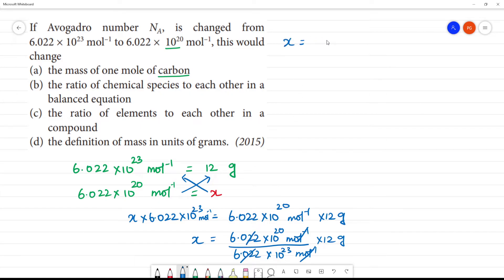x is equal to 10^23 mol^-1. So it is canceled. What happens? If Avogadro number changes from 10^23 to 10^20, the mass of 1 mole of carbon will change. 12 grams becomes 12×10^-3 grams.